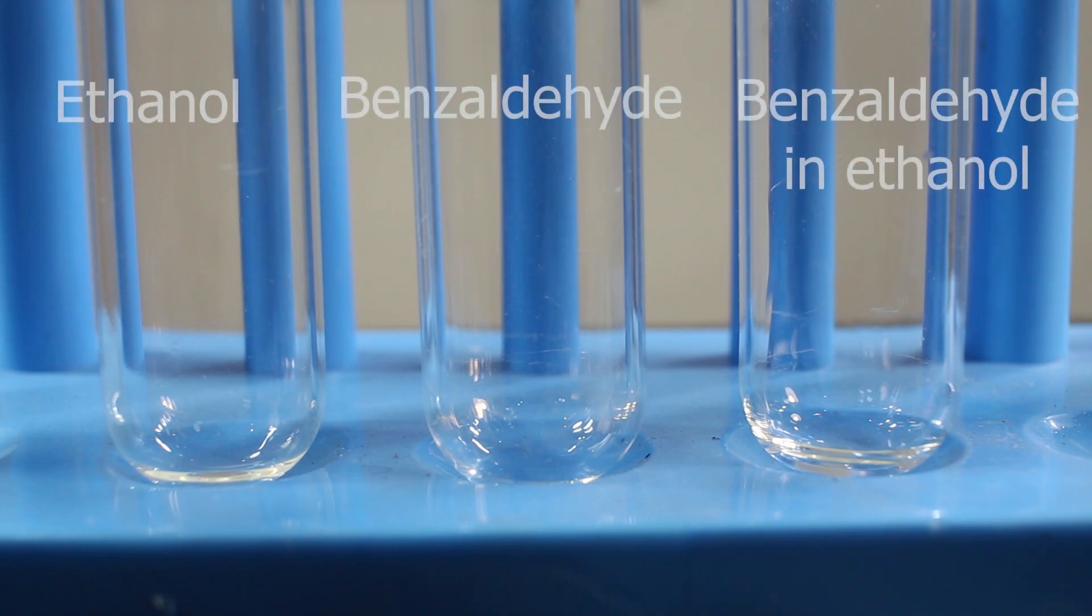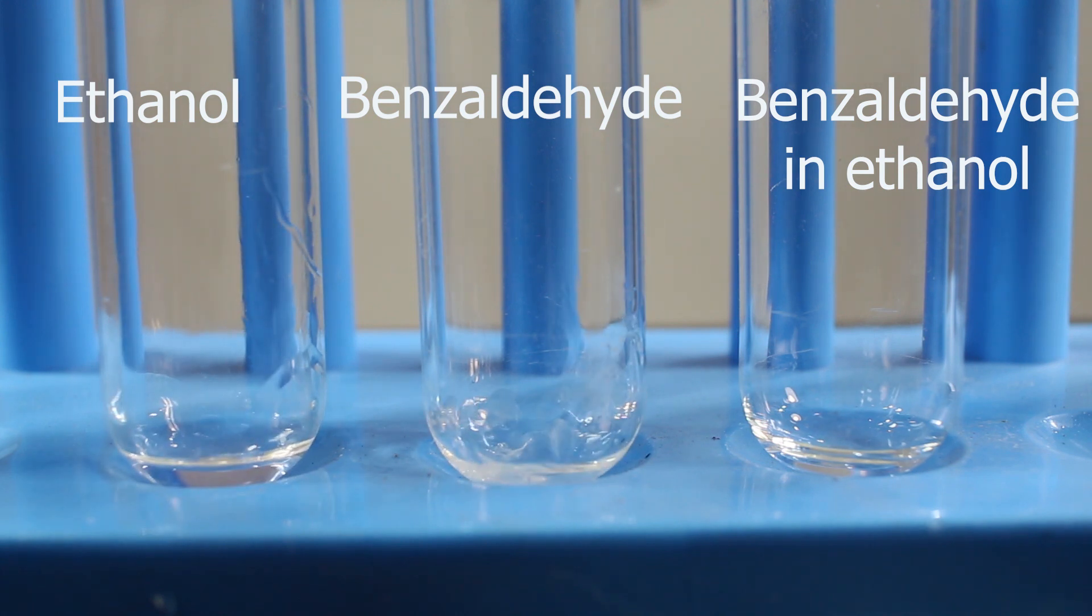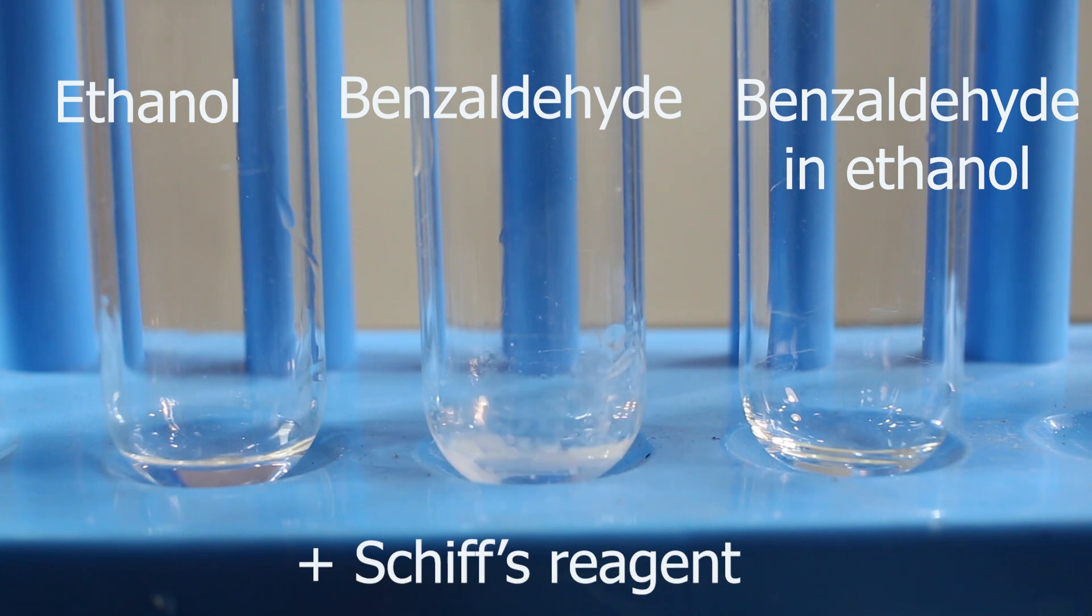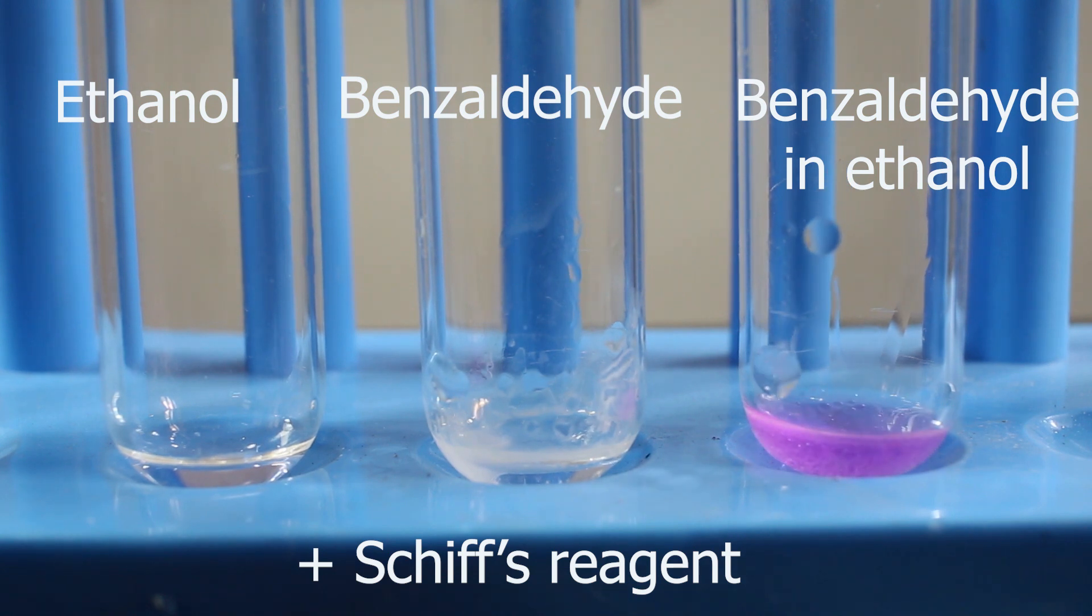Now it's time for Schiff's reagent, which is colorless itself. And it goes in the first one, in the second, and in the third. Couple of drops. You can see the color change in the third one. Positive result for aldehyde.